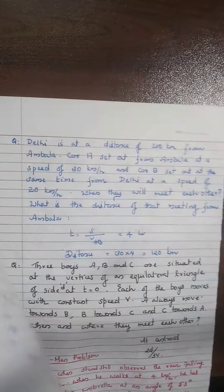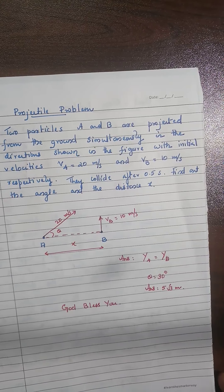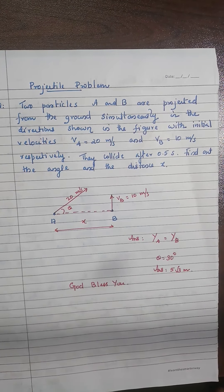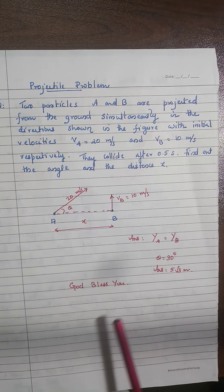A very important examination question: two particles A and B are projected from the ground simultaneously in directions shown in the figure with initial velocities VA and VB. They collide after 0.5 seconds. Find the angle and the distance X. Since they collide, they must have the same vertical displacement at that time — equate the vertical displacements to get the answer.